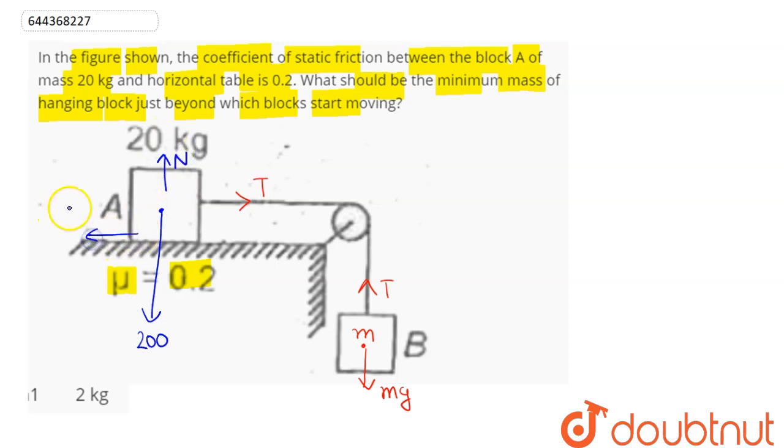And we can say here, friction will act in the minus x direction. So, here coming to body B, we have T equal to Mg. And here coming to body A, we can say here, normal reaction comes out to be 200 Newton.